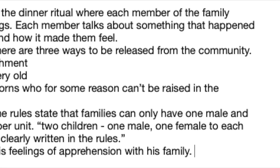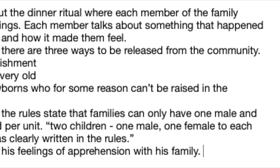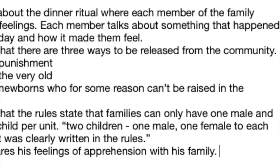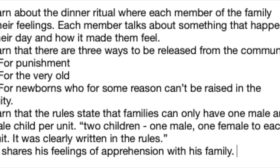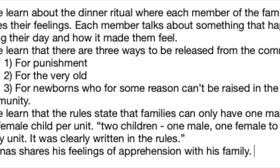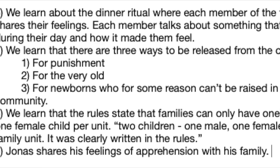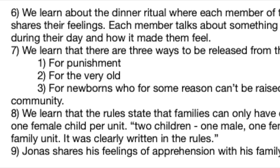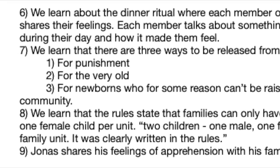In this chapter we also learn about the dinner ritual where each member of the family shares their feelings about something that happened during the day. We hear from Lily and her problem on the playground, from the mother and a case she's working on, and from the father with the baby that's having a difficult time. We also learn there are three ways of being released from the community: as punishment, for the very old, and for newborns who can't be raised in the community. The rules state that families can only have one male and one female child per unit — 'Two children, one male, one female, to each family unit' — that's a quote from the book you might want to use in an essay. Jonas shares his feelings of apprehension with his family, and they discuss it privately.